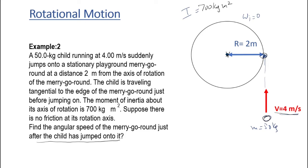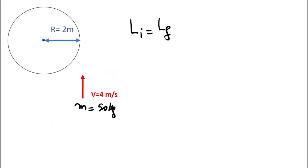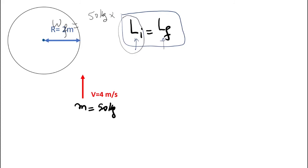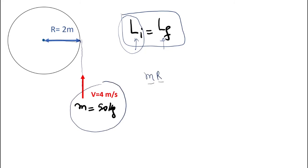The net external torque is zero, so we have conservation of angular momentum. The angular momentum initial will be equal to the angular momentum final. The initial angular momentum is the angular momentum of the child — the mass times R times V.